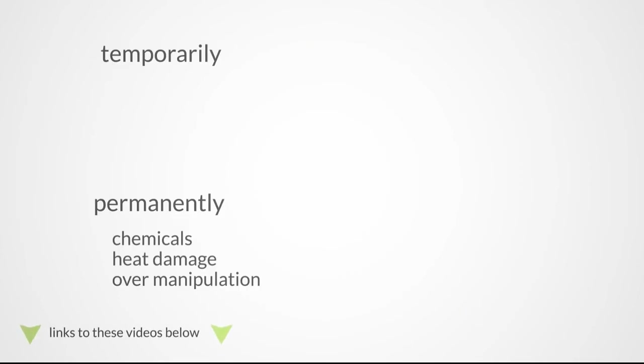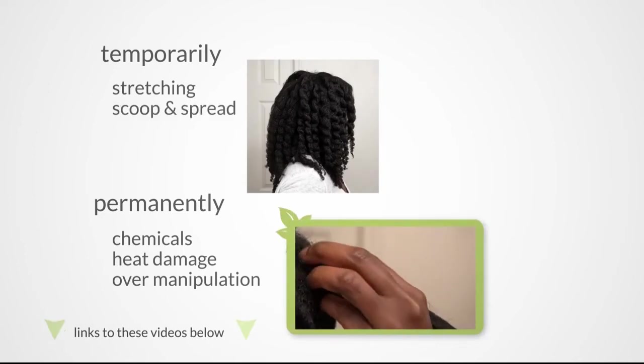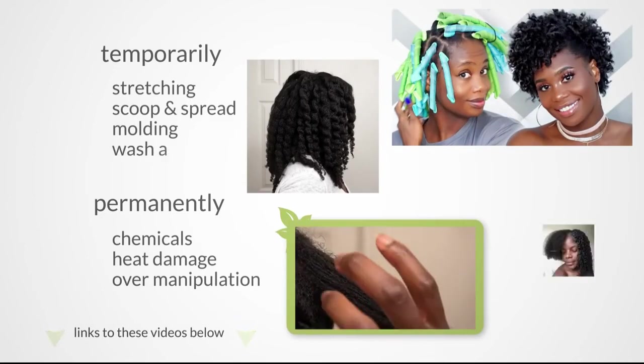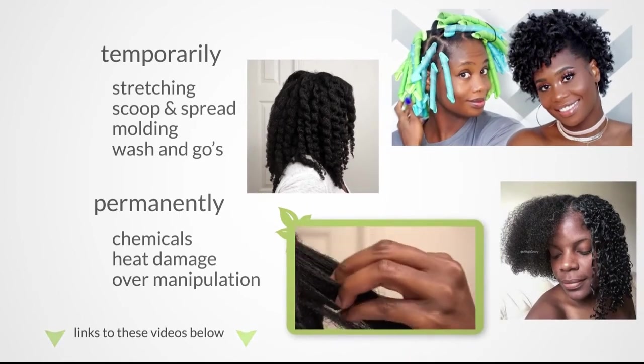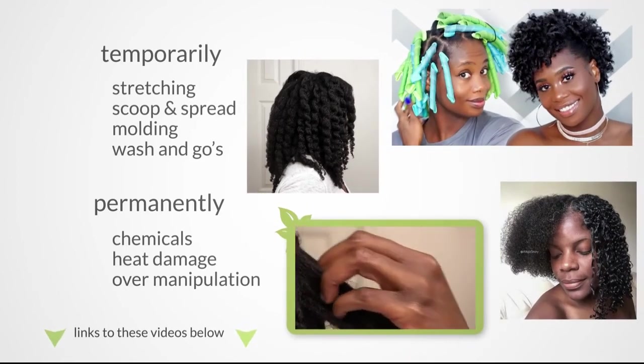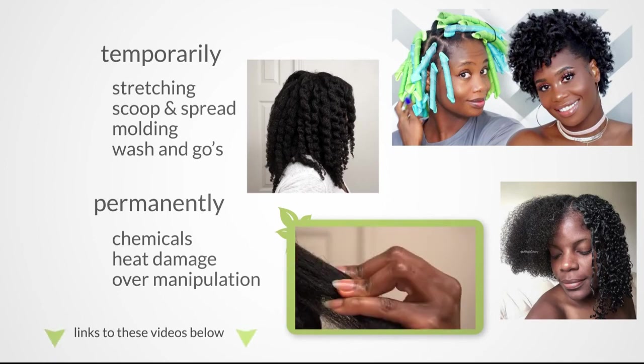A temporary change in curl pattern can be achieved with stretching, scooping and spreading, molding, and wash and goes. If done correctly, all of these options keep the structure of your hair intact and help you avoid tangles and breakage.